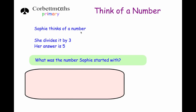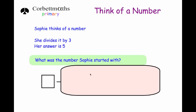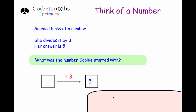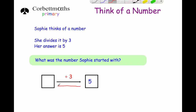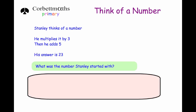The next question: Sophie thinks of a number, she divides it by three and her answer is five — what was the number Sophie started with? Working backwards, the inverse of dividing by three is to multiply by three. Five times three is fifteen. Let's check: fifteen divided by three is five. So her number was fifteen.